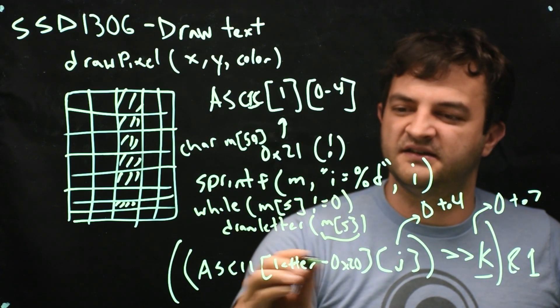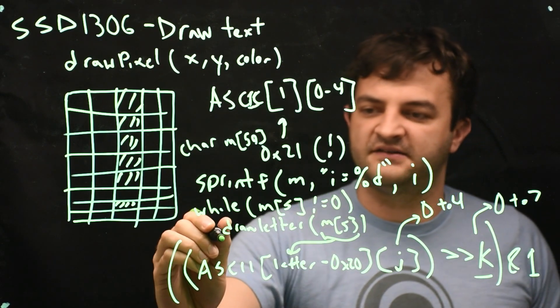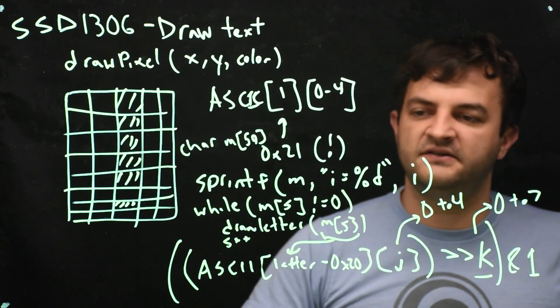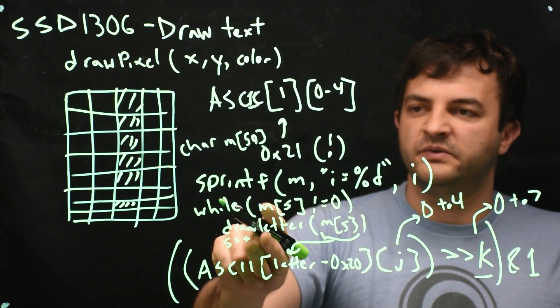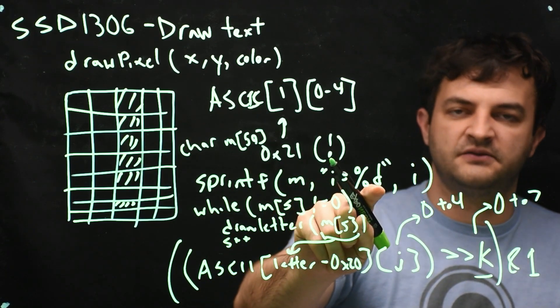And then we'll say s plus plus. And how does this automatically end? Well, when we use sprintf to make this character array, after it's done writing the last letter, it always inserts a 0 as the next character.